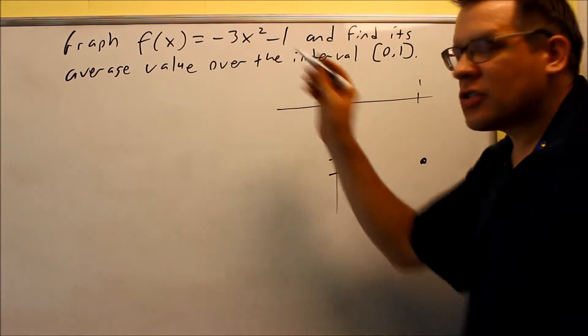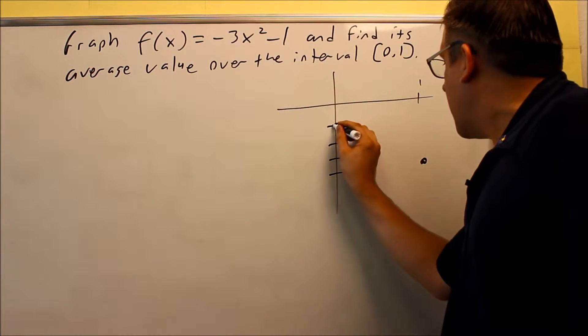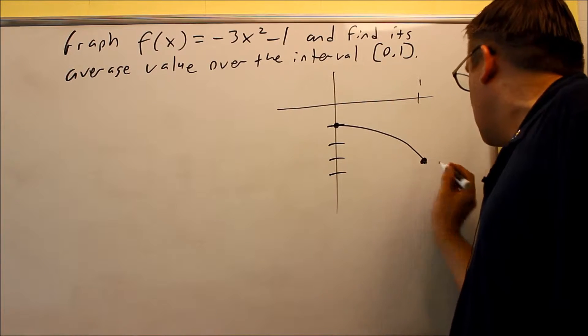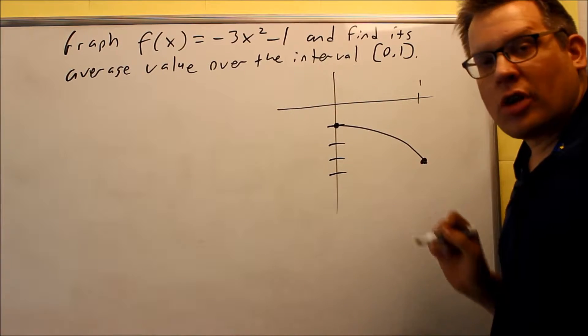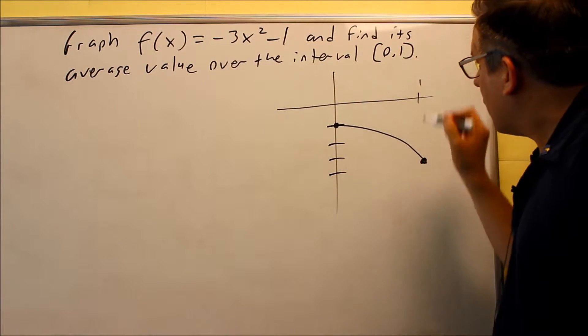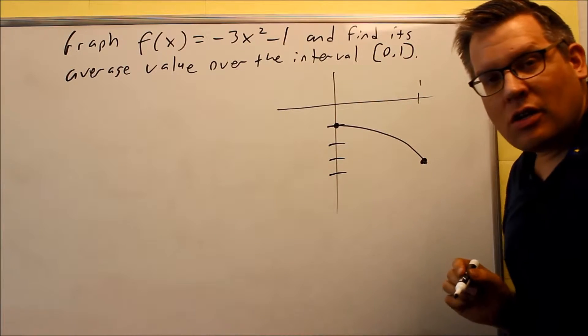And I know that because it's a parabola with the negative in front of the square, I know it'll be opening down like this. So this is the only section I'm looking at because we're only talking about what's happening between 0 and 1.